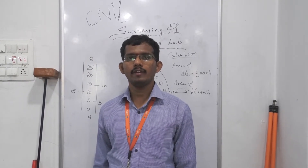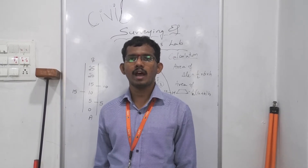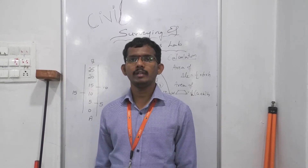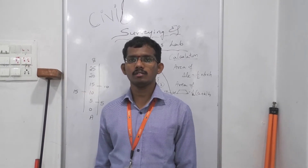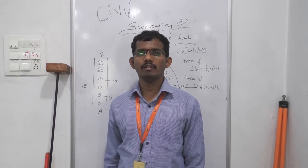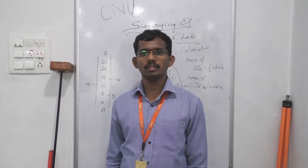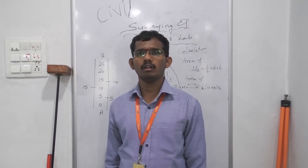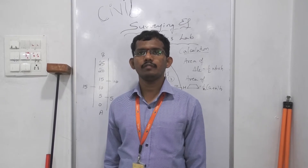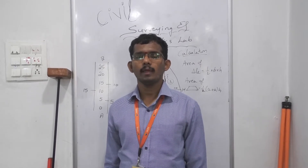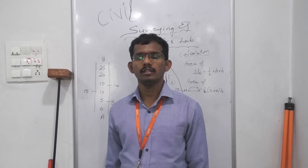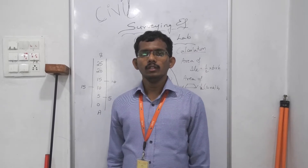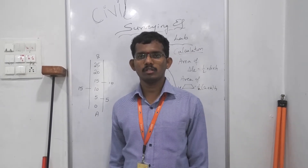There are various chains available in the market. Starting from metric chains, we have 20m and 30m lengths. For a 20m length chain, we have 100 links. For a 30m length chain, we have 150 links. We also have Gunter's chain — 66 feet long and 100 links. Revenue chain — 100 feet long, 100 links. Engineer's chain — 33 feet long, 16 links. And steel band — about 100 feet to 500 feet long. These are the basic chains used in surveying.